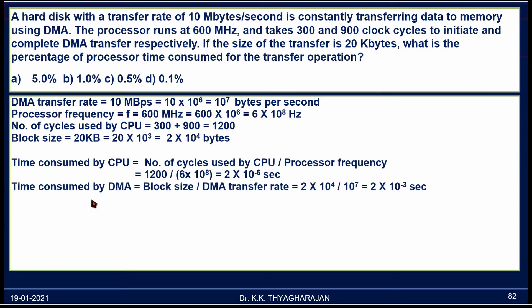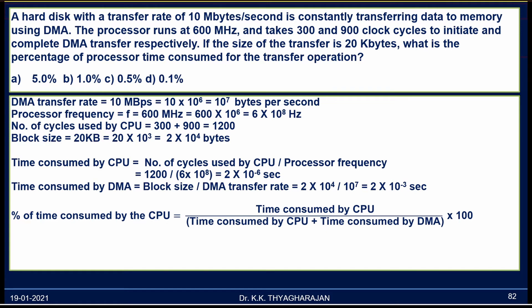Next, the time consumed by DMA operation is calculated. DMA is transferring 20 kilobytes at a transfer rate of 10 megabytes per second. The time taken equals block size divided by DMA transfer rate: (2 × 10⁴) ÷ (10⁷) = 2 × 10⁻³ seconds. The total time required is the time used by the CPU plus the time used by the DMA.